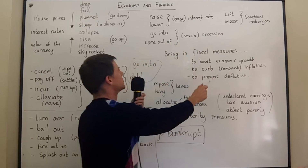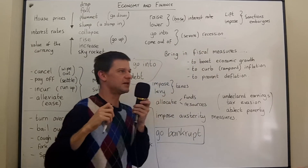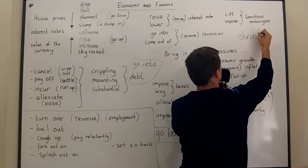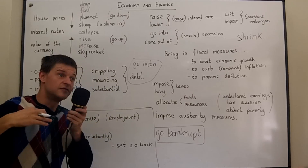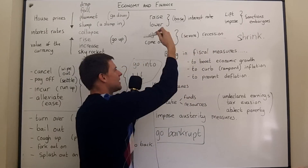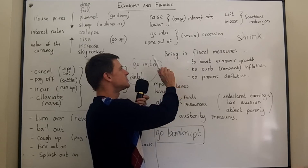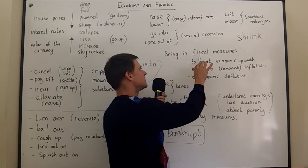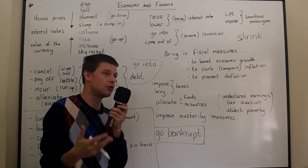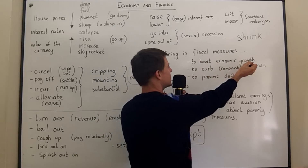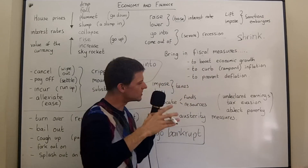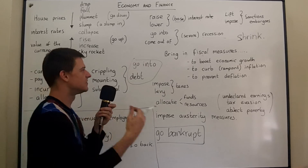You can also go into recession and come out of recession. Recession is a period of difficulty for the economy — it's when the economy shrinks, meaning gets smaller, like clothes shrinking in the wash. When you're in a severe recession, to come out of it you may need to introduce new laws and bring in some fiscal measures. Fiscal is similar to financial as an adjective, and here it means new laws relating to the economy. You might bring in measures to boost economic growth.